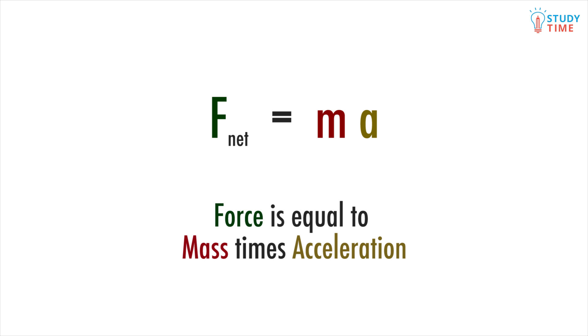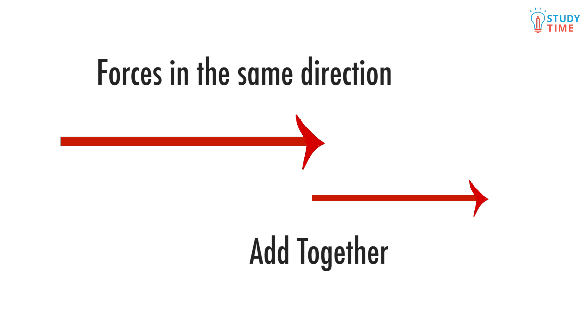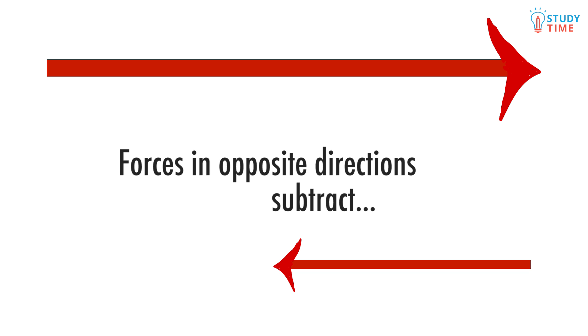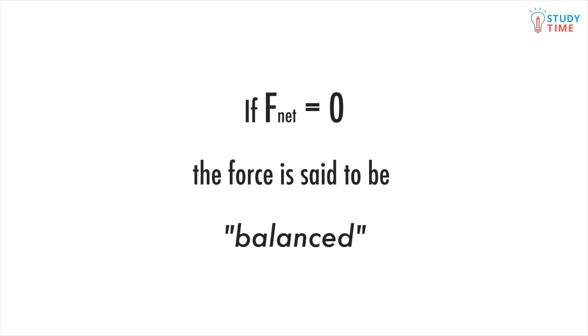The equation is for a net force so it's the combination of all the forces acting in the same or opposite directions on an object. If forces are acting in the same direction they're added together. If forces are acting in opposite directions they're subtracted. If the net force equals zero the force is said to be balanced and the object doesn't accelerate or change speed. If the net force doesn't equal zero then it is unbalanced and the object is accelerated.